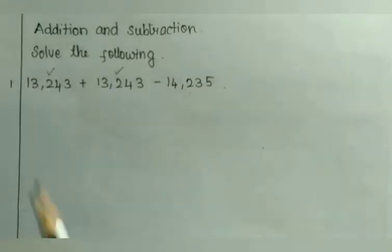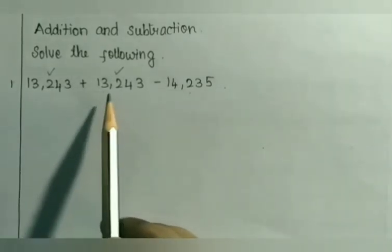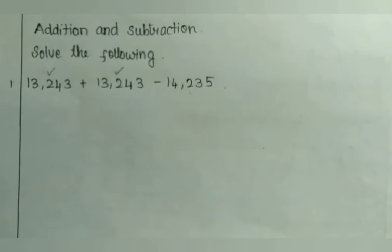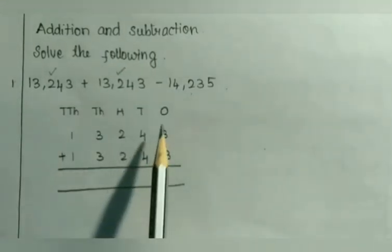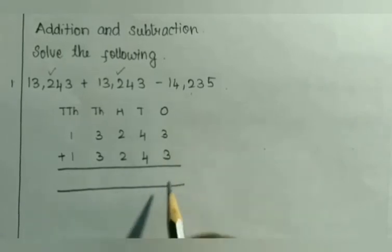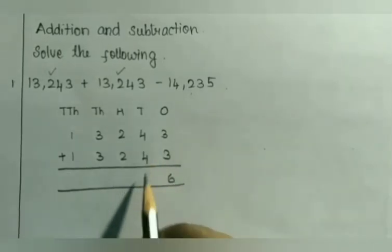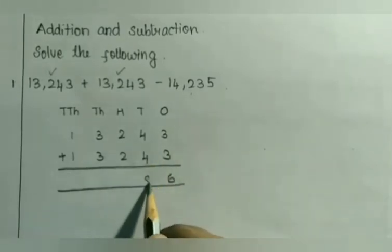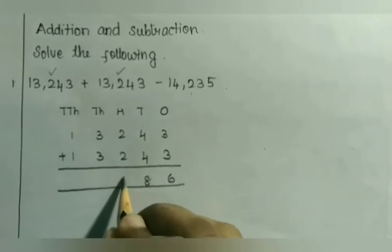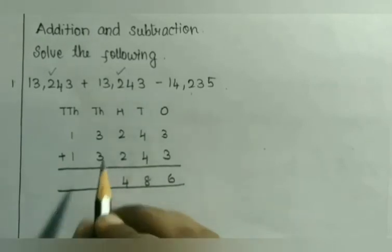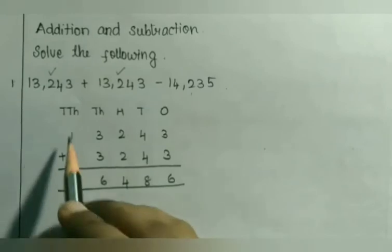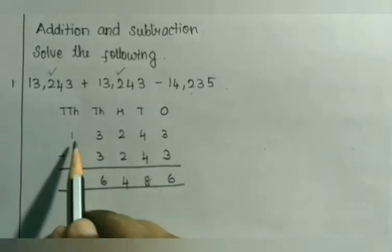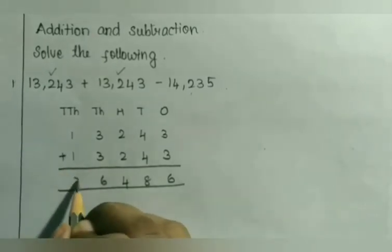Let us first add these two numbers by writing them in columns. Starting from the 1's position: 3 plus 3 is 6, 4 plus 4 is 8, 2 plus 2 is 4. Thousands place: 3 plus 3 is 6. Ten-thousands place: 1 plus 1 is 2.